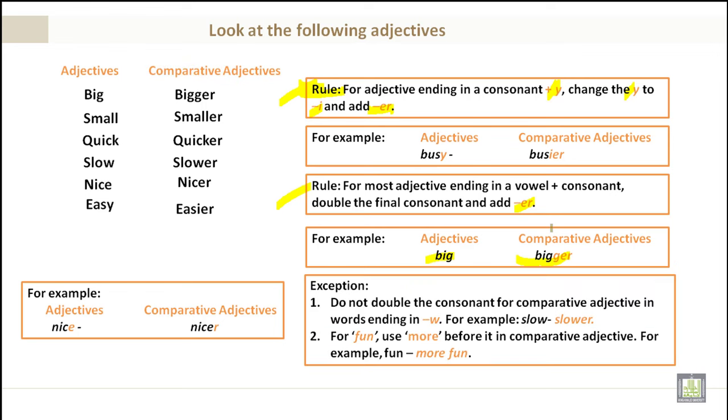Now the exceptions. Do not double the consonant for comparative adjectives in words ending in W. For example, slow became slower. For fun, you use more before the comparative adjective. For example, more fun.